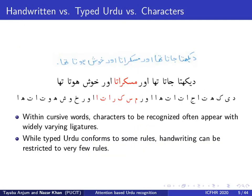Here we see handwritten Urdu text in the first row, the corresponding typed text in the second row, and the individual characters in the third row. It can be seen that within cursively written Urdu words, the individual characters appear with widely varying ligatures. While typed Urdu conforms to some rules, handwriting can be restricted to very few rules.